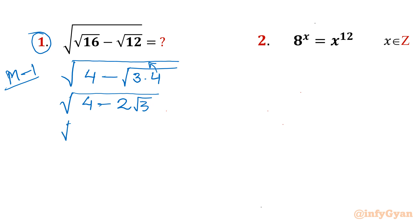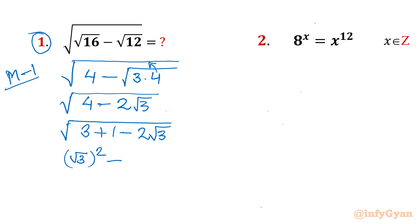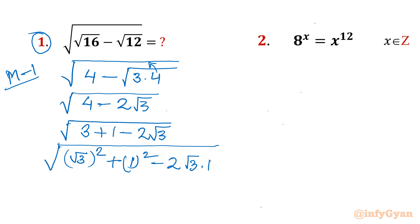Now 4 can be split as 3 plus 1, and then 2 root 3 as it is. We can write 3 as (root 3)², and 1 as 1². Then we have 2 times root 3 times 1, which gives us the form a² + b² − 2ab — a perfect square pattern. If we presume root 3 is 'a' and 1 is 'b', this matches the formula a² + b² − 2ab, with the square root outside.